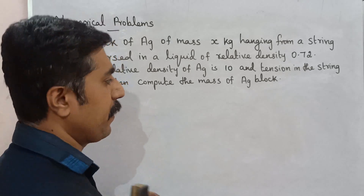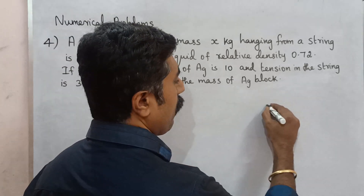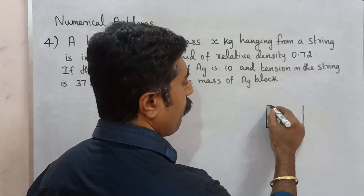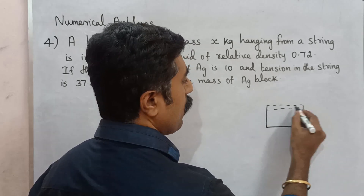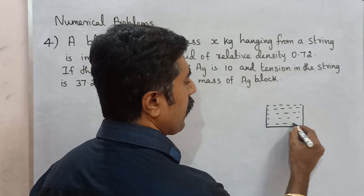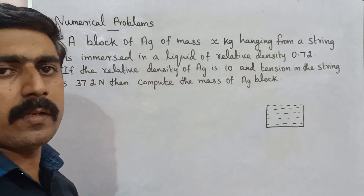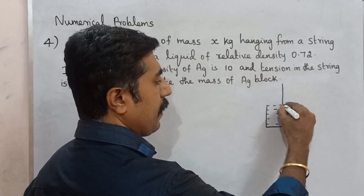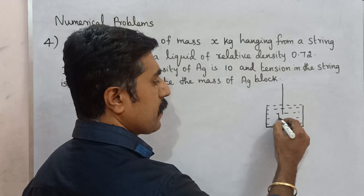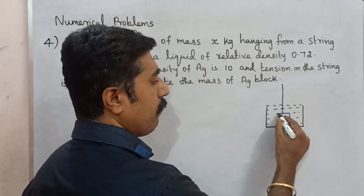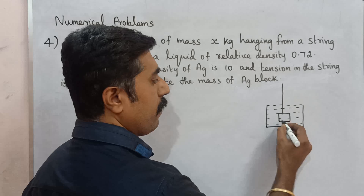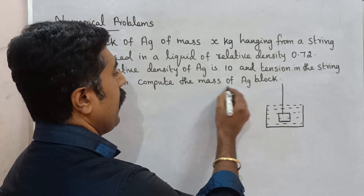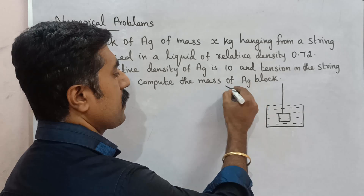Very simple. First, we have a beaker. In the beaker, we have a solution. Here is a string. It is a silver block suspended from the string inside the solution.